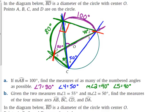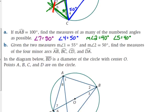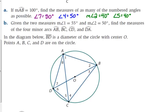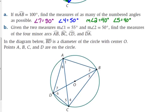Part B resets the problem — I have a clean picture. Part B says: if the measure of angle 1 is 55 degrees and the measure of angle 2 is 50 degrees, find the measures of the four minor arcs AB, BC, CD, and DA. Angle 1 is the inscribed angle for which arc? Extend the lines of angle 1 — BC is its intercepted arc.